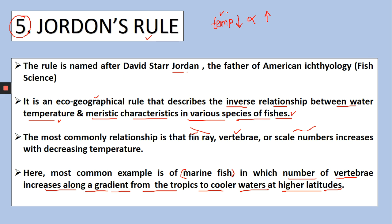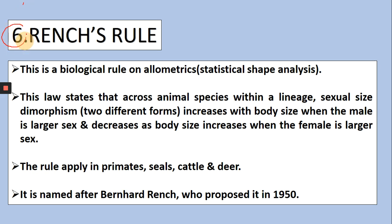The next and sixth rule is Rensch's Rule — basically a biological rule given by Bernhard Rensch in 1950. The rule is named after him, and this rule is basically about allometrics. Allometrics — whenever we define this word it means we are talking about statistical data and statistical shape analysis. Again, this law states that across animal species within a lineage, there is sexual dimorphism. Dimorphic means two different forms — like if you look at a male and female you can clearly see they look different, like a peacock and a peahen — that is what we call dimorphism.